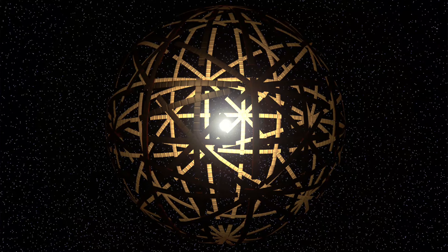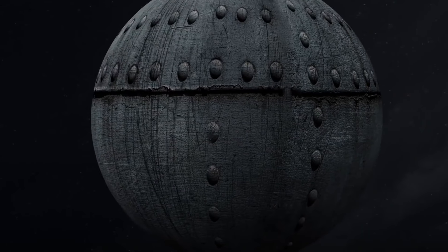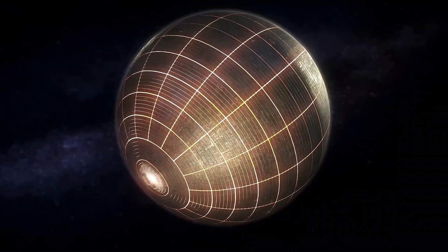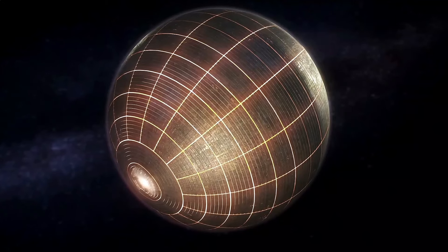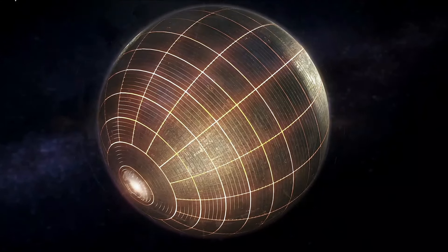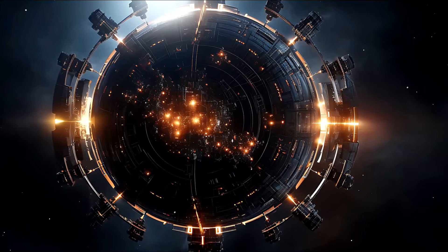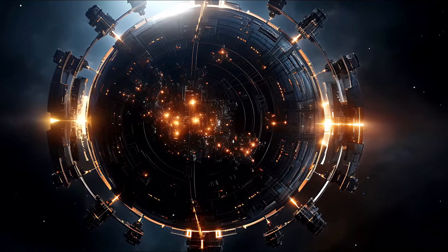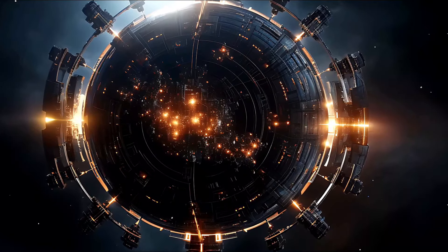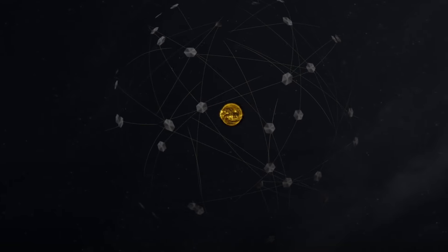Another concept is the Dyson Shell, a solid structure surrounding the star entirely, capturing nearly all of its emitted energy. Intermediate designs include Dyson Bubbles, which are smaller-scale versions of Dyson Spheres, enclosing only a portion of a star's surface.